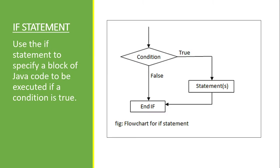So let's jump into the if statement. Use the if statement to specify a block of code to be executed if a condition is true. It will execute the code if the condition we placed becomes true. For example, in this flowchart diagram, this is our condition inside the diamond shape. If it's true, it will proceed to our statement or block of code. But if it's false, the condition or statement will end.